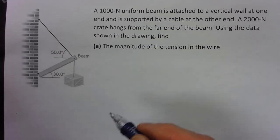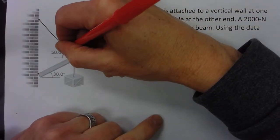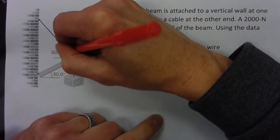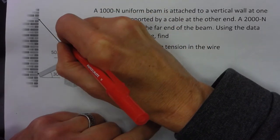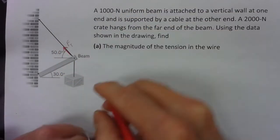In any of these static problems, we need to identify where the forces are, where they act, and what direction they go. We know that this cable is going to apply a tension that I'll call F sub T in that direction.